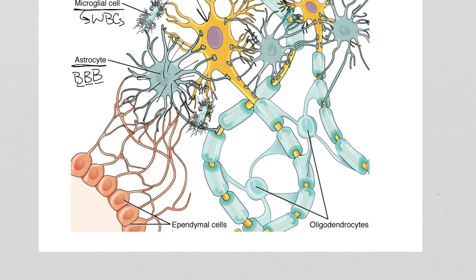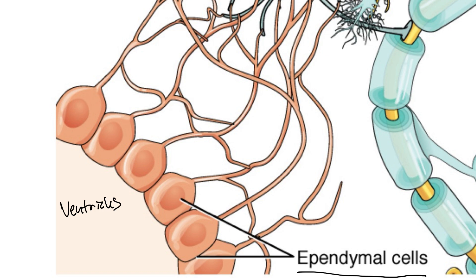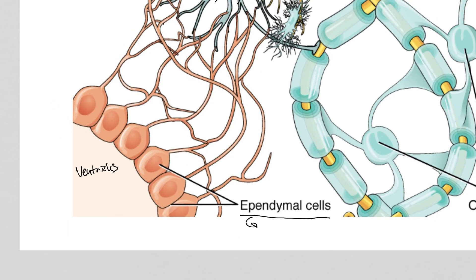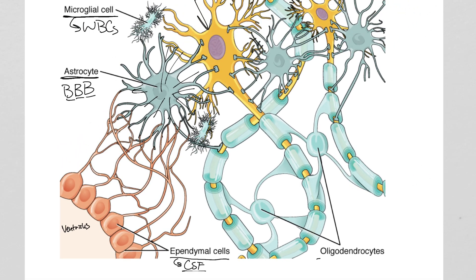The next type, ependymal cells, line open spaces in the brain. Those big open spaces are cavities we call ventricles. Their function in the ventricle is to produce cerebrospinal fluid, or CSF. So they're basically the gatekeeper between blood and CSF — two of the most important fluids you find in the brain. We'll see all of these again in more detail shortly.